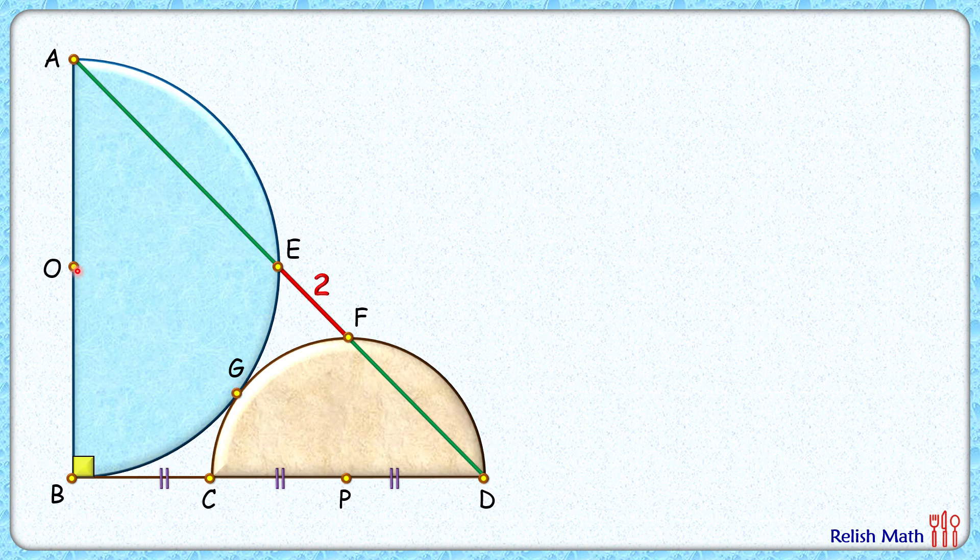So let's start by joining points O, G, and P. Now for the blue semicircle, let's assume the radius is R, and thus OG length will also be R. For the brown semicircle the radius is r, and it's given in the question that BC length is the same r. GP is the radius, so it's r.